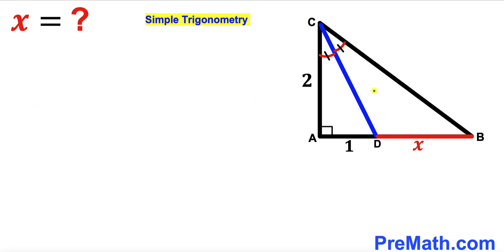Welcome to pre-math. In this video, we have got this right triangle ABC along with this angle bisector CD, as you can see in this diagram.